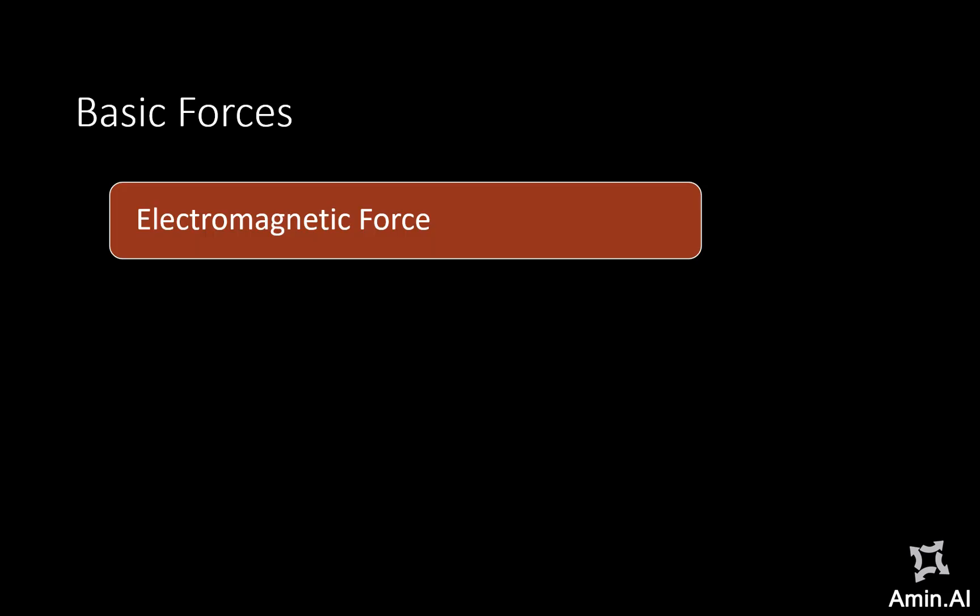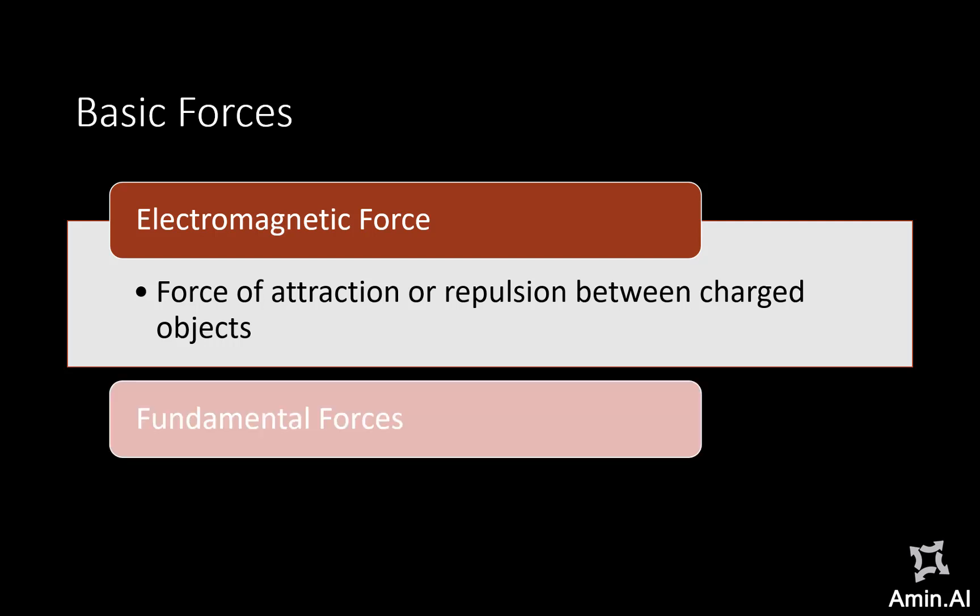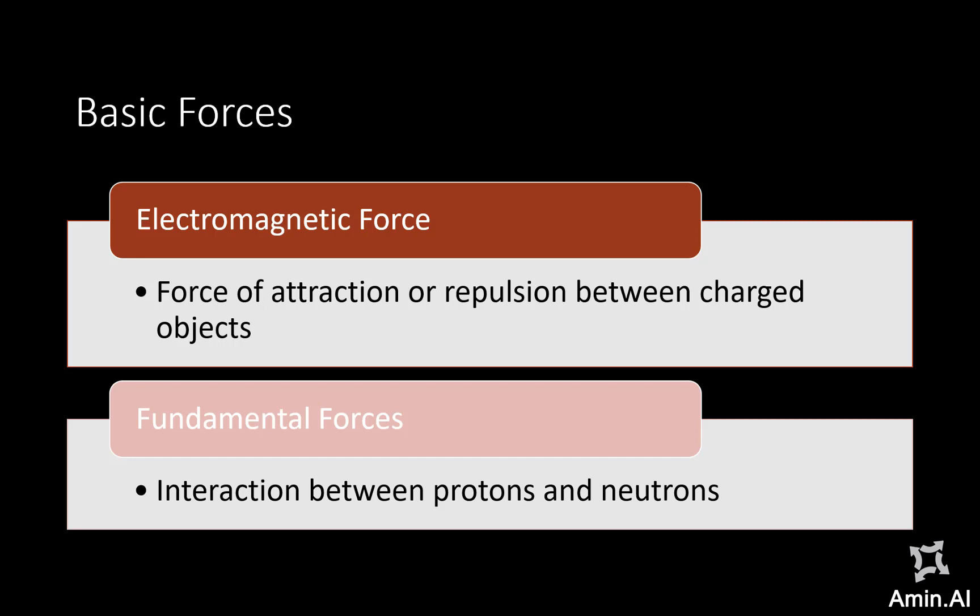Now we are going to discuss a few forces that exist in the atom. One is the electromagnetic force, which is a force of attraction or repulsion between any charged objects. It is attraction if the charges are opposite, like negative and positive, and repulsion if the charges are the same, like two negative or two positive charges. There are also strong forces, weak forces, and fundamental forces — these are the interactions between protons and neutrons. Since protons exist in the nucleus, you need a certain force to keep them together, as the electromagnetic force would repel them.